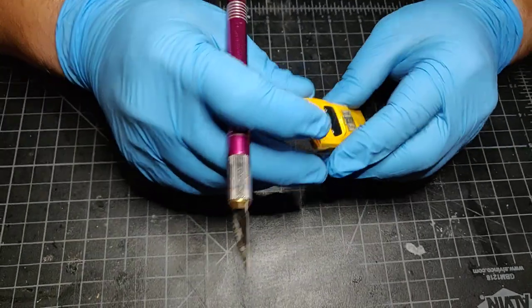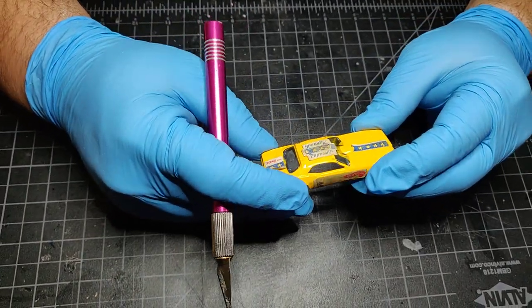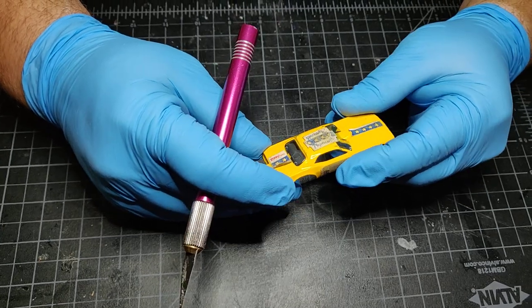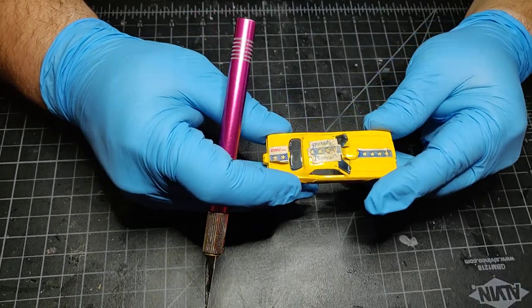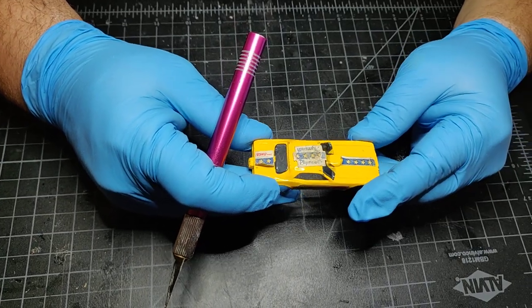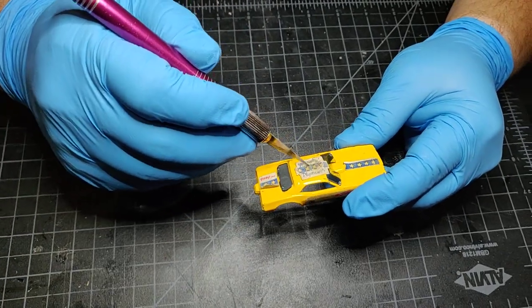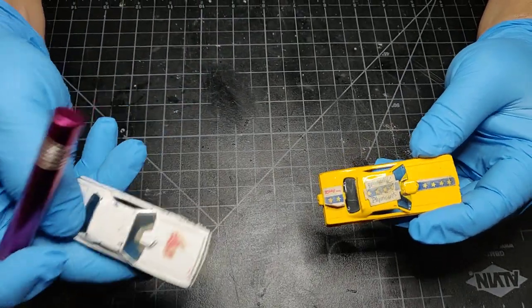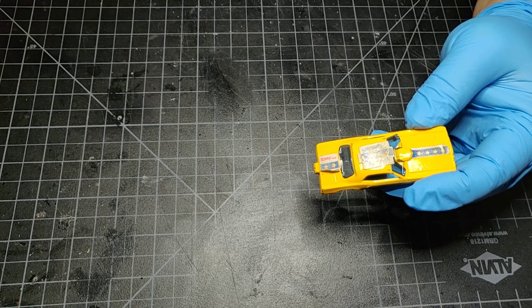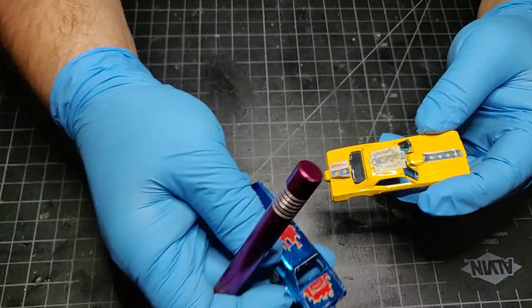Alright guys, welcome back to the channel. Quick video here. I was looking on YouTube and nobody has ever done a video showing how to remove the windshield from the Snake and Mongoose. These both are Snake, this is a Mongoose.